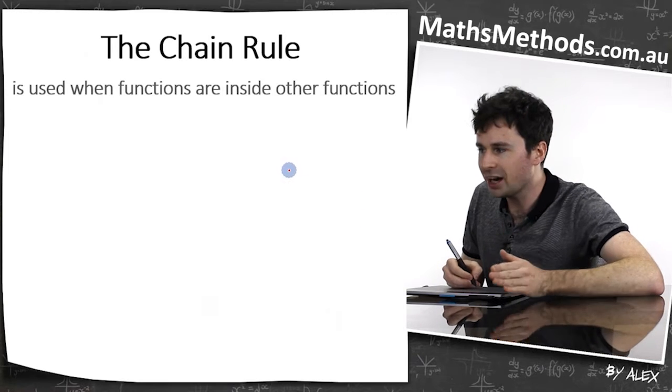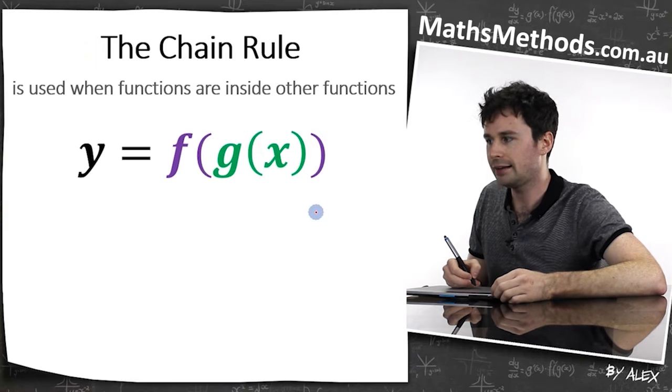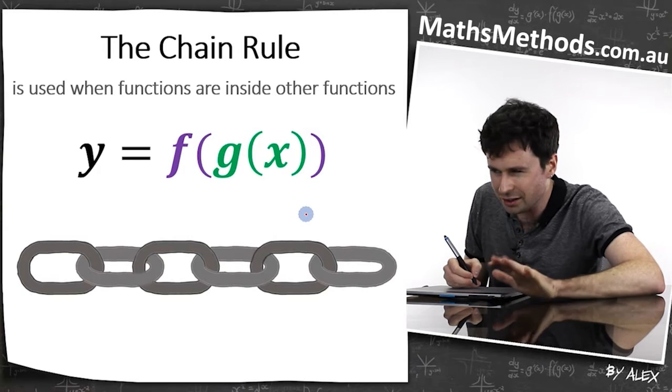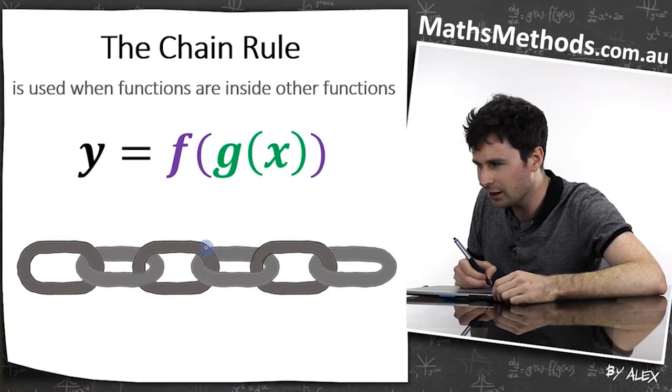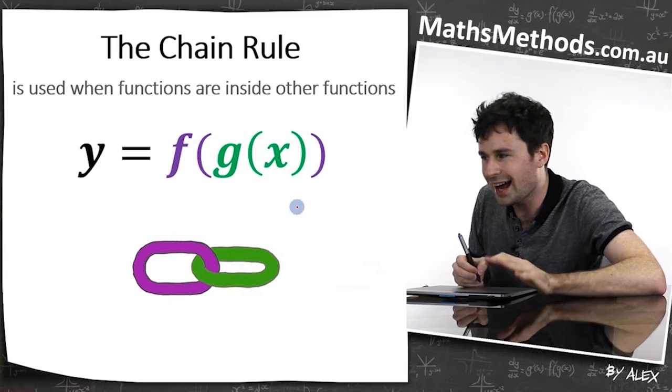The chain rule is used when functions are inside other functions, something like this. You can see it looks a little bit like a chain. If I just highlight this as being the outside and this being the inside, you can see how it is a chain.